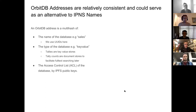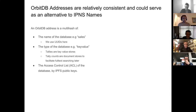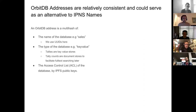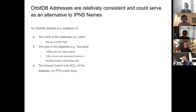The cool thing about OrbitDB is that the addresses — you've seen like /orbitdb/Qm... blah blah blah — those are relatively consistent because they're generated as a multihash of the name of the database, the type of the database, and the access control list of the database. So if two users in two completely different parts of the world generate those same values and create a database, they're working from the same database. If you've ever used the OrbitDB chat client, you've seen people freak out about this because they'll download it, run it on localhost, and then just start chatting with people everywhere — confused about how it's happening. And that's how.